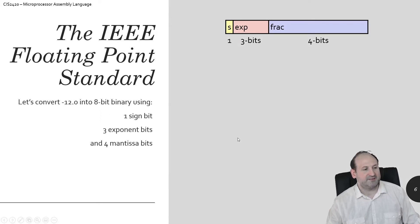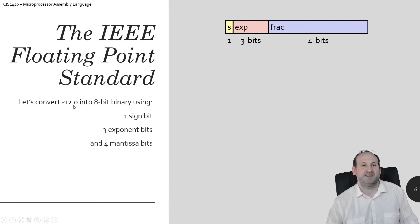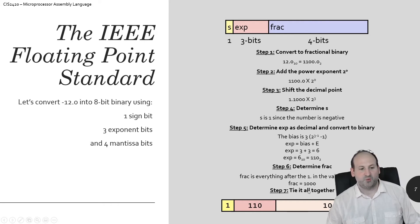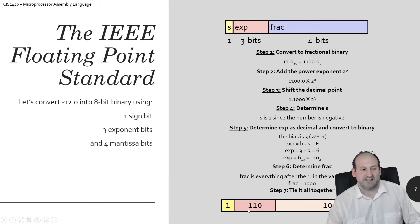Negative 12.0: I could represent this as an integer, but as a float it's a completely different representation. 12 in binary is 1100, so we have 1100.0. We're going to put a one for the sign bit since it's negative. Move the decimal point over three times. The fractional part 1000 goes in. The sign bit is one. Three plus three gives six for the biased exponent. So the result is 1 110 1000.